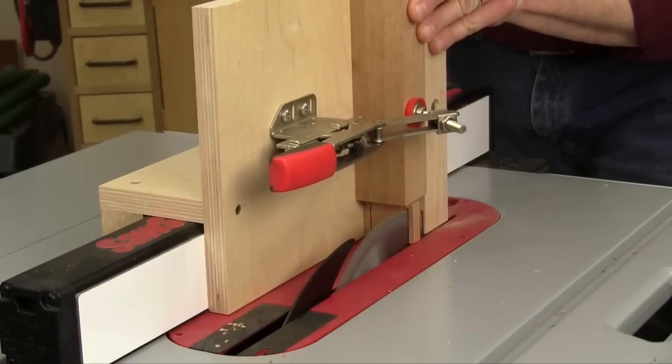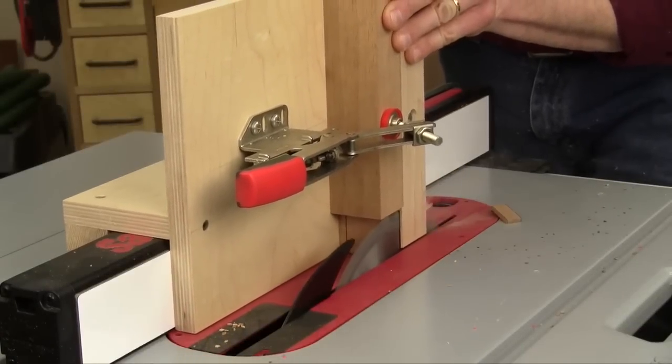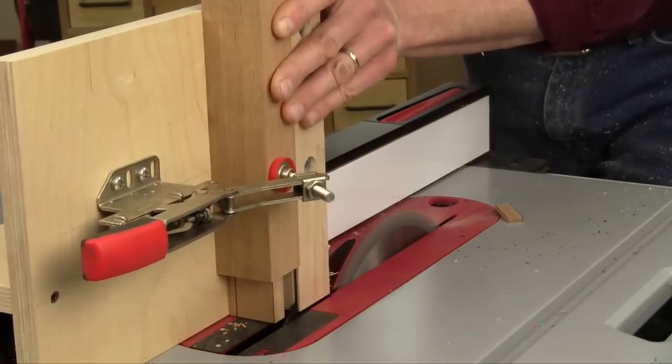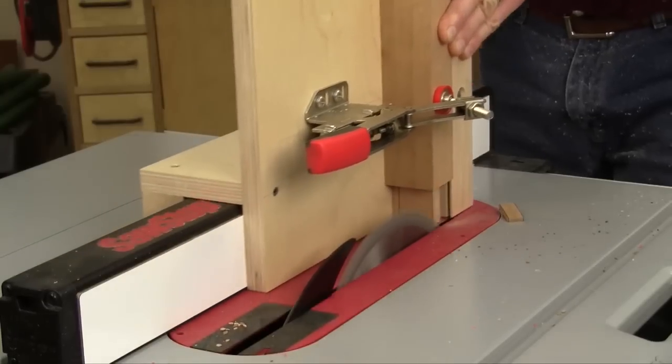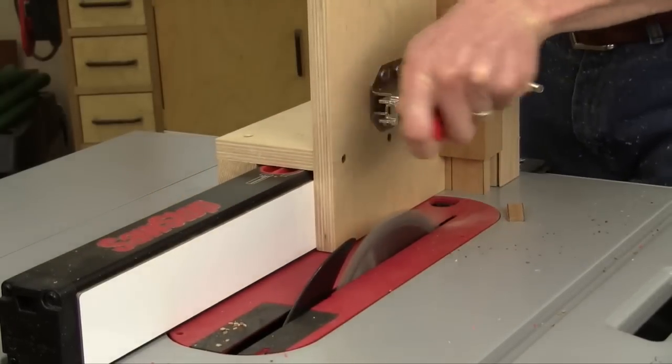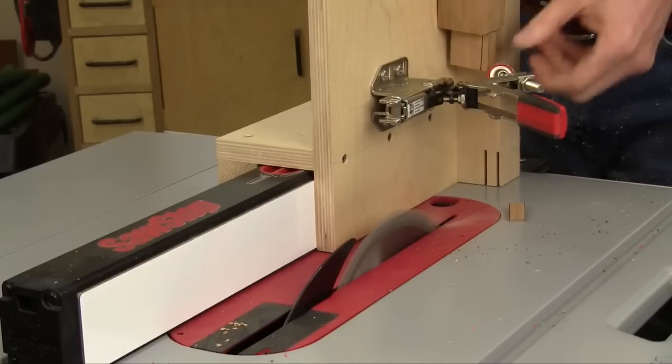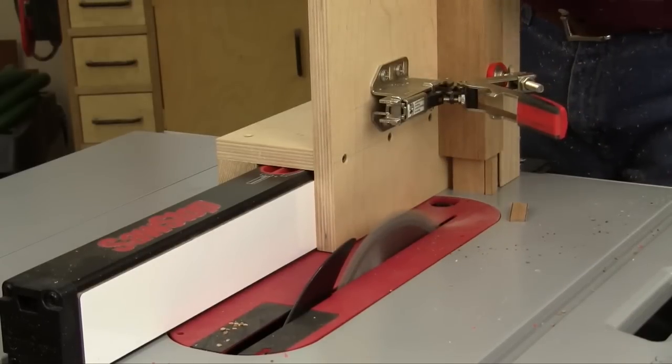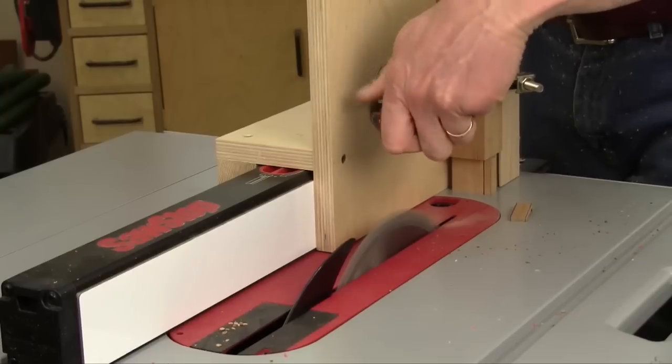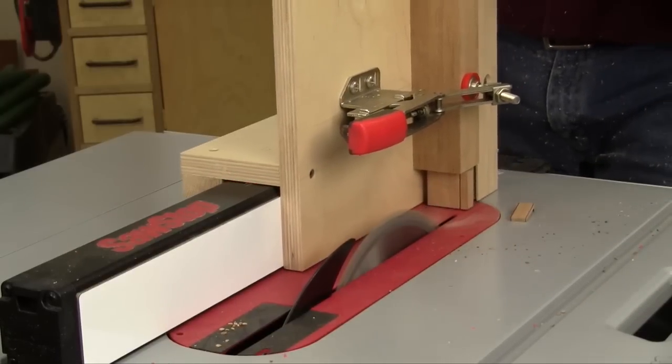Make these last cheek cuts the same way as before, flipping the tenon from one edge to the other in between cuts. Hold or clamp the work piece in the jig as needed to stabilize it. If it's too wide to hold or clamp safely or easily, make these cuts at the bandsaw or with a handsaw instead.